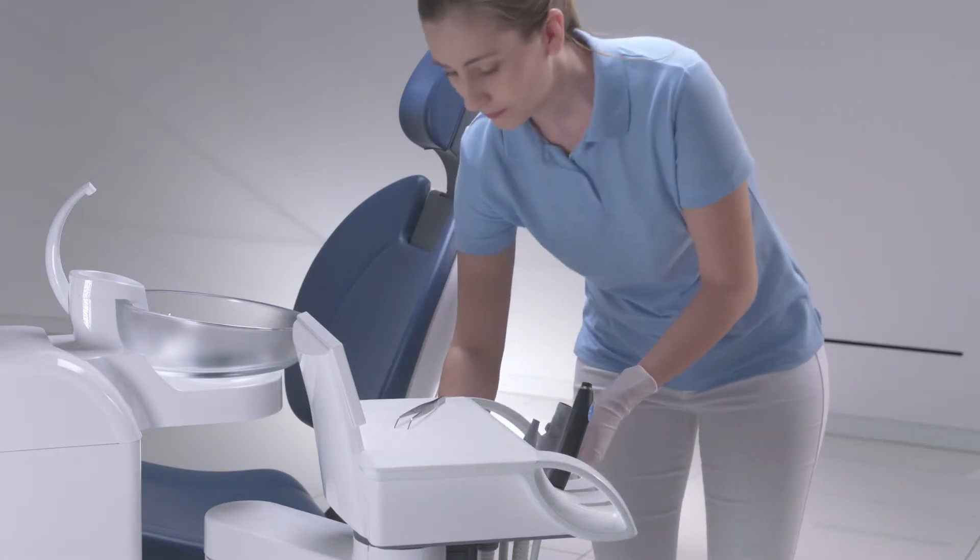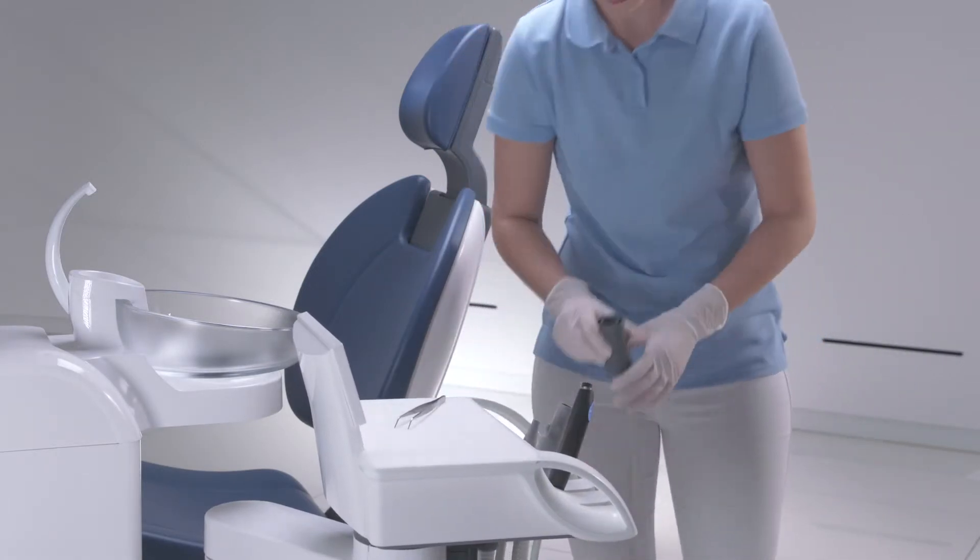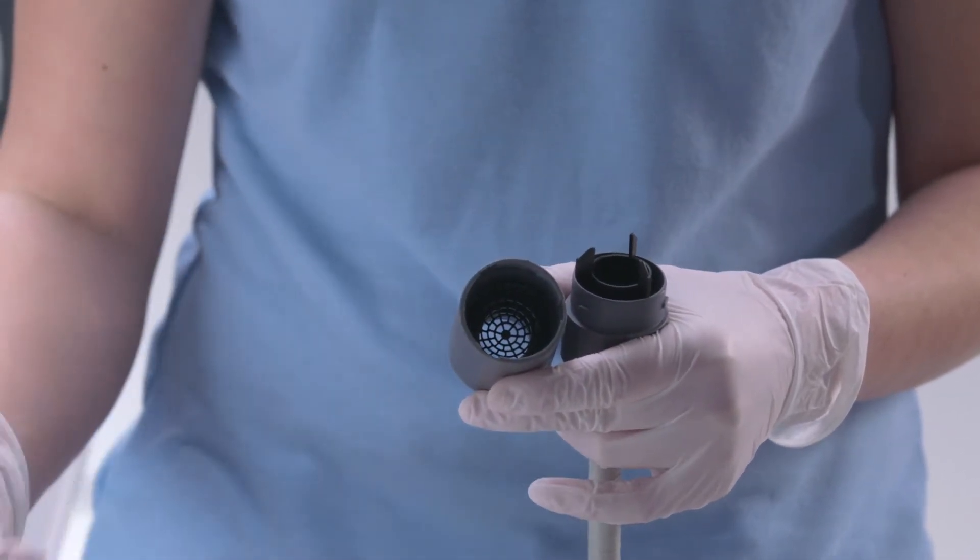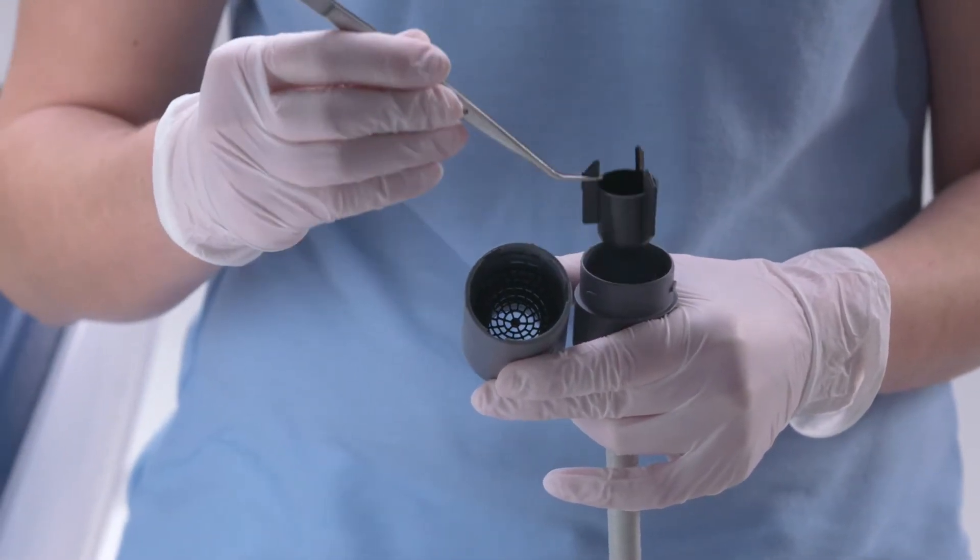Pull the filter housing from the connections on the assistant element and then disconnect the suction hoses from the filter housing. Take the collectors out of the suction hoses.